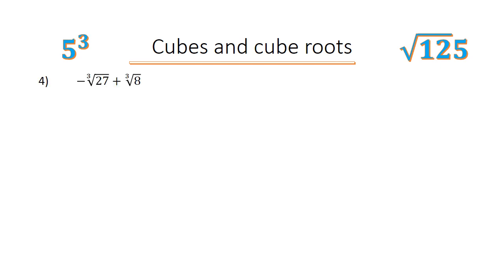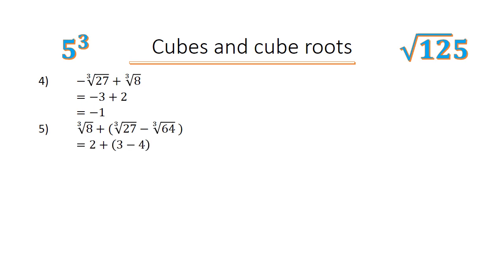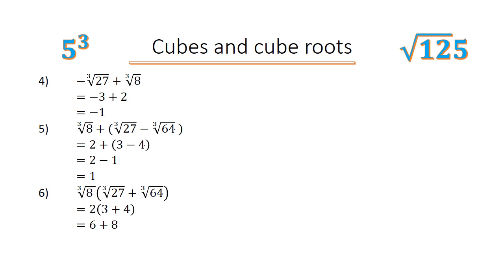Cubes and cube roots: negative the cube root of 27 plus the cube root of 8 equals negative 3 plus 2 equals negative 1. Cube root of 8 plus (cube root of 27 minus cube root of 64) equals 2 minus 1 equals 1. Cube root of 8 times (cube root of 27 plus cube root of 64) equals 2 times (3 plus 4) equals 6 plus 8 equals 14.